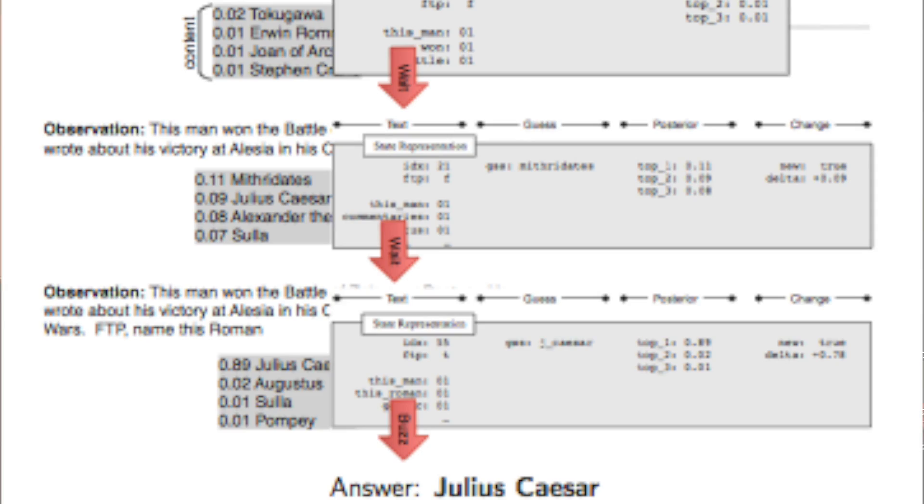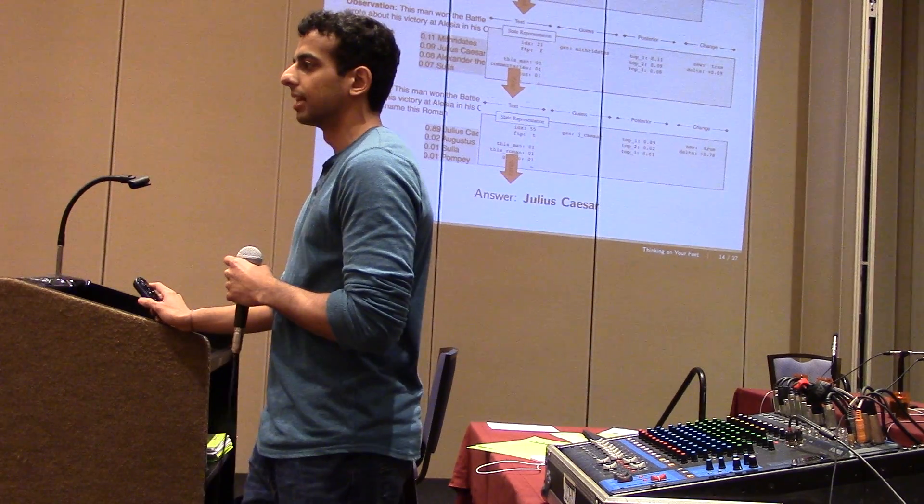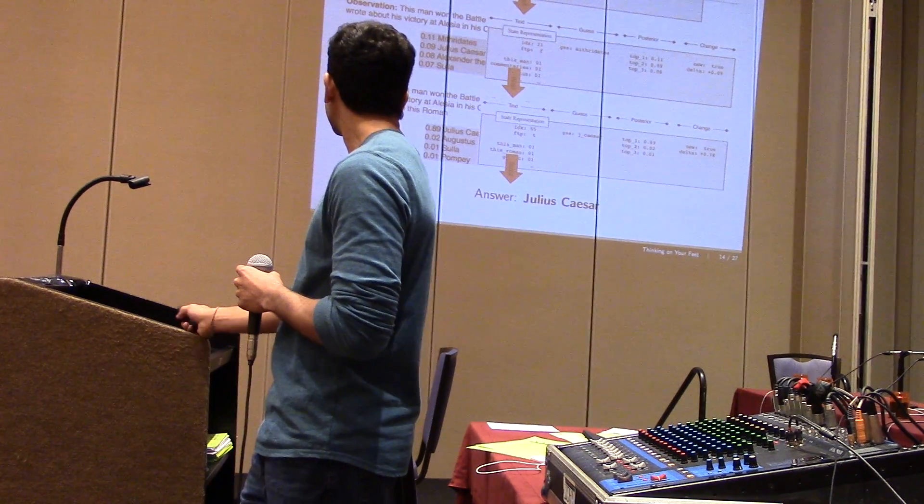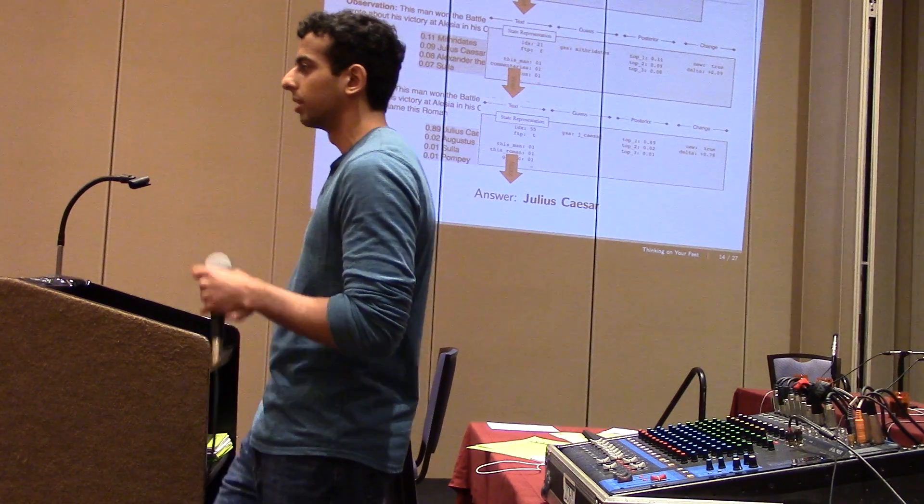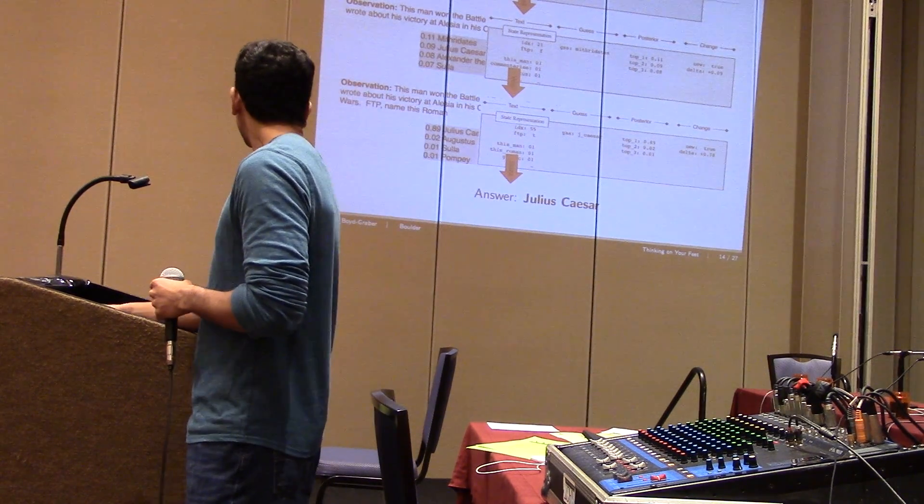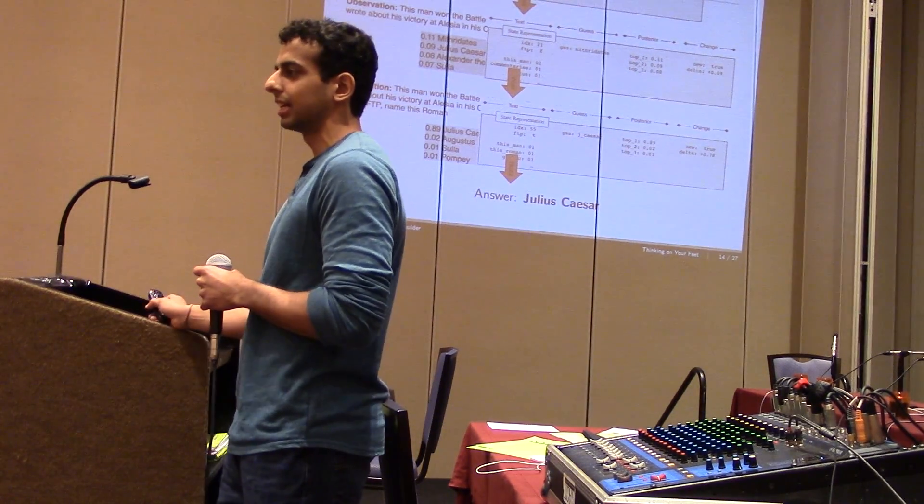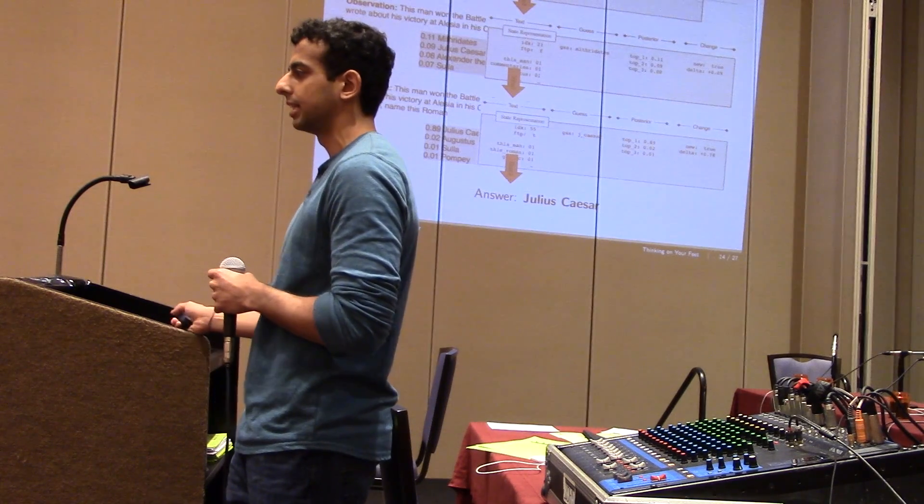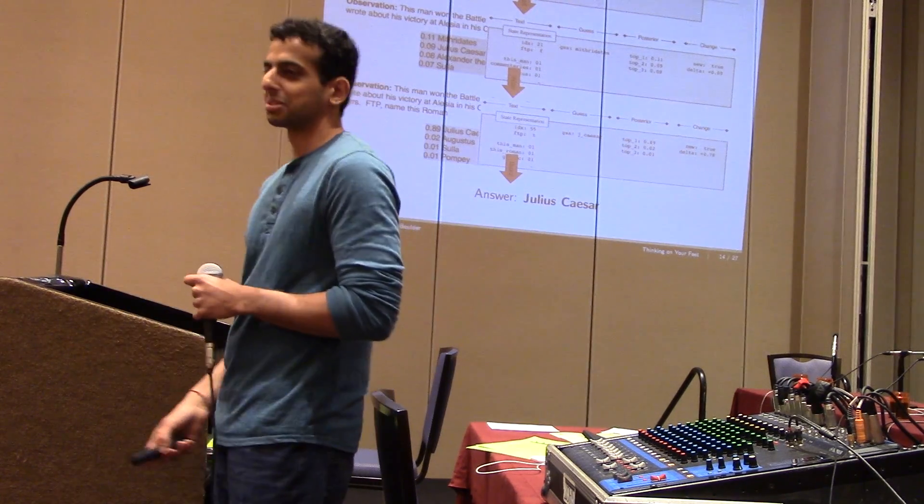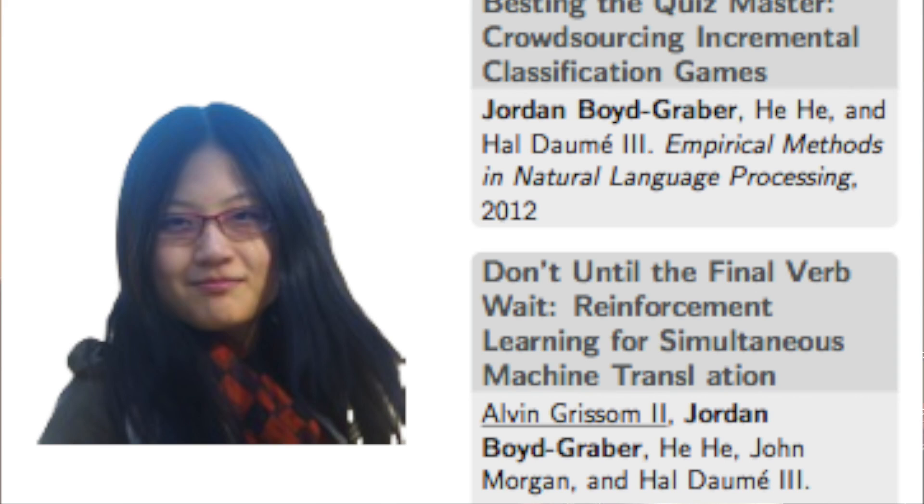And so finally, it gets to for 10 points, name this Roman. And when it sees the word Roman, it becomes 90% confident that Julius Caesar is the correct answer. And it buzzes in and gets it correct. So I guess just wanted to emphasize that this all comes from our data set of like 20 years of quiz bowl questions. And our model hopefully has a pretty good idea now of when to buzz and when to wait to hear more. Although I guess we'll see in the competition how well it actually does.